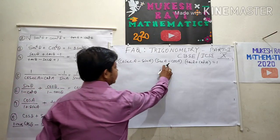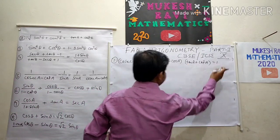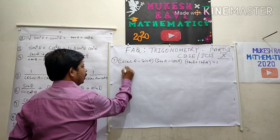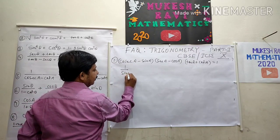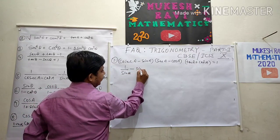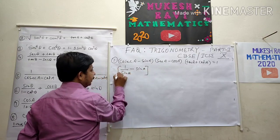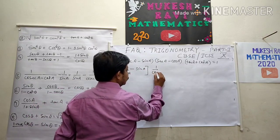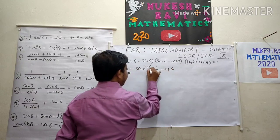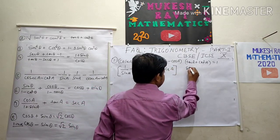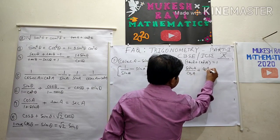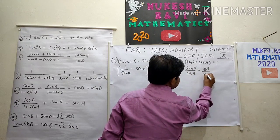Now the first question: (cosec A − sin A)(sec A − cos A)(tan A + cot A) is equal to 1. See here — cosec converted into primary value is 1/sin A, sec converted is 1/cos A, tan A is sin A/cos A, and cot A is cos A/sin A.